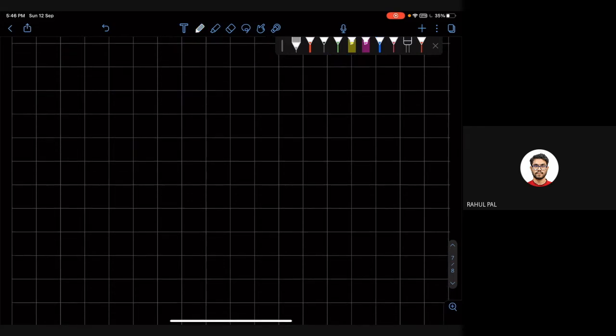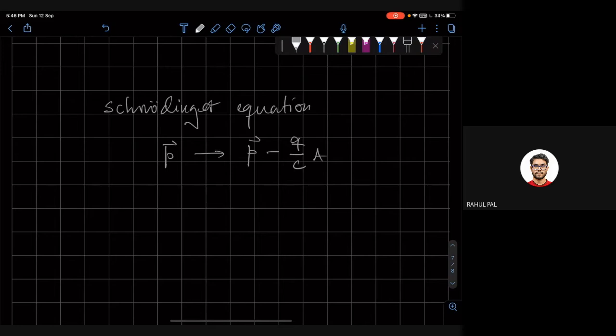Now look at the gradient operator. We know that in the Schrödinger equation, when we turn on a gauge field, p will get replaced by p minus q/c times A, assuming that phi is zero. In this case, phi is zero.